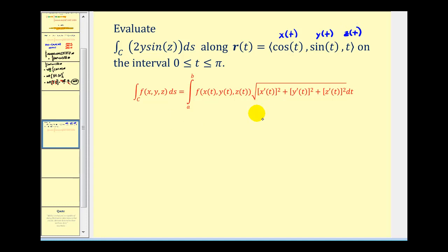So we know that x prime of t would be equal to negative sine t, y prime of t is equal to cosine t, and z prime of t would be equal to one.